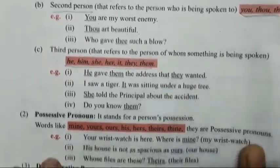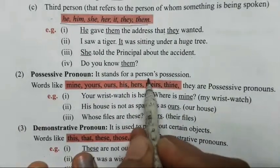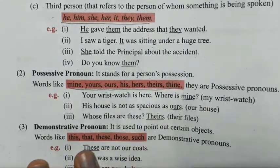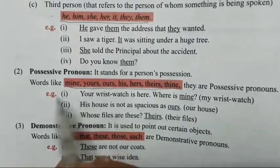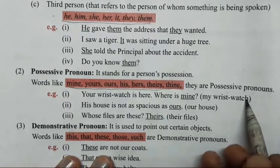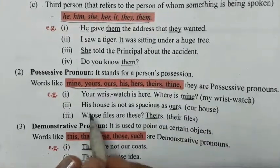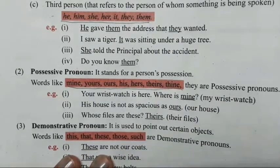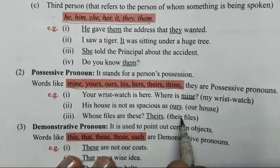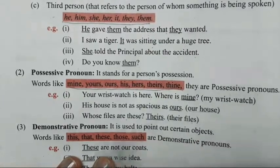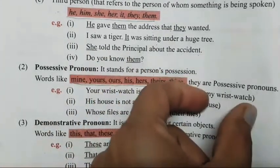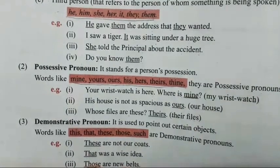Second is possessive pronoun — it stands for a person's possession. Possessive pronoun ki words hain: mine, yours, ours, his, her, theirs. Example: 'Your wrist watch is here. Where is mine?' — my wrist watch ke jagah pe hum ne 'mine' likh diya. 'His house is not as spacious as ours.' 'Whose files are these? Theirs.' So possessive pronoun mein directly ek word mein define karte hai — short mein.